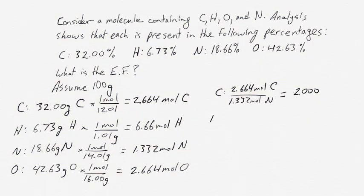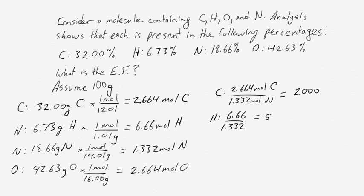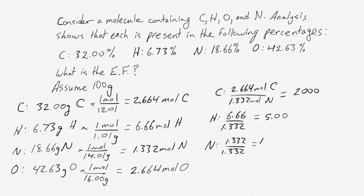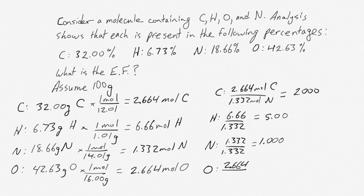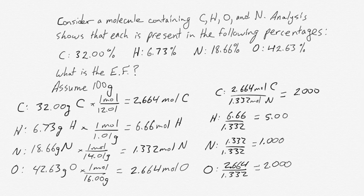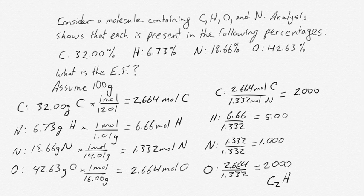That number happens to be 2.000. For hydrogen: 6.66 moles divided by 1.332 gives 5.00. For nitrogen: 1.332 divided by 1.332 gives 1.000. For oxygen: 2.664 divided by 1.332 gives 2.000. These represent the numbers of each atom relative to the number of nitrogen atoms — for every two carbons, five hydrogens, and two oxygens, you have one nitrogen. This means the empirical formula is C2H5NO2.